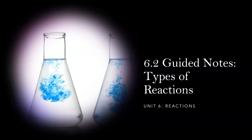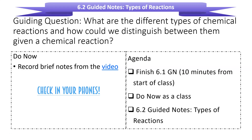Hello everyone, these are the 6.2 guided notes on types of reactions. By the end of this activity, you'll be able to answer the guiding question: what are the different types of chemical reactions, and how can we distinguish between them given a chemical reaction? You can watch the video that demonstrates and shows you actual lab examples of each of the different reaction types.